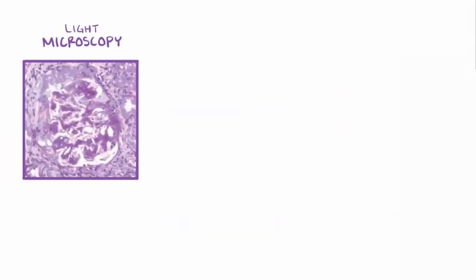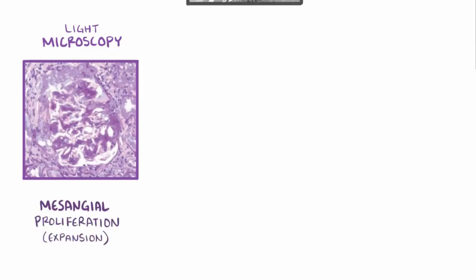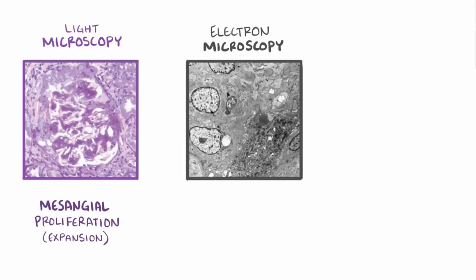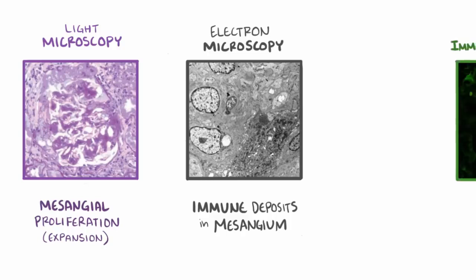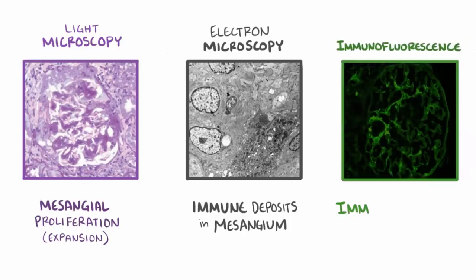On light microscopy, there will often be mesangial proliferation, or expansion of the mesangium. Upon getting a closer look with electron microscopy, there will be immune complexes deposited within the mesangium. Those immune complexes can also be visualized on immunofluorescence, and one important finding that helps differentiate from other immune-complex-mediated nephropathies is that these complexes involve IgA.